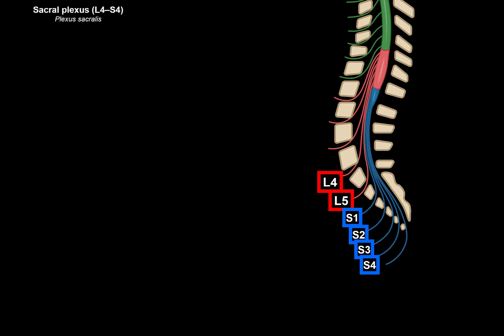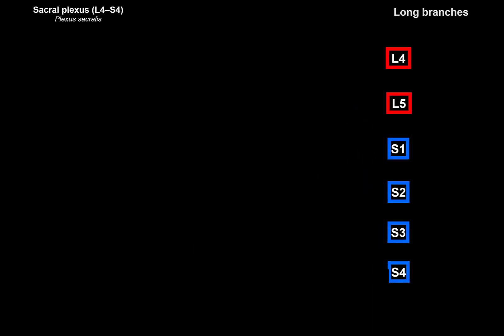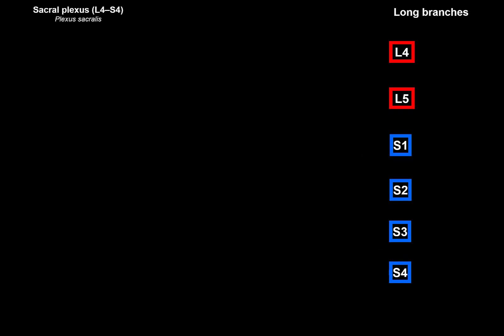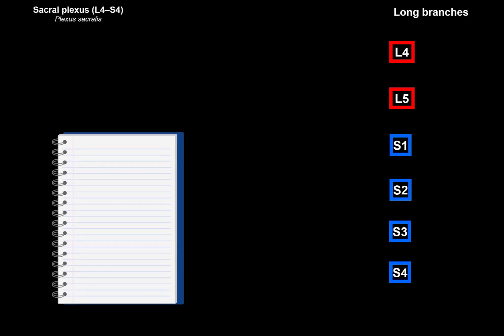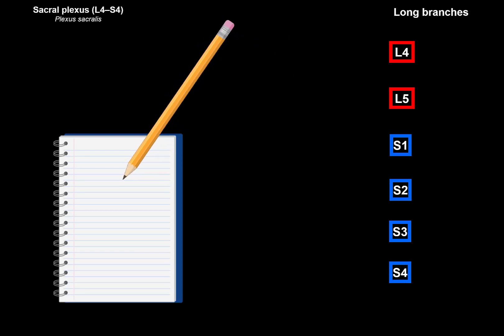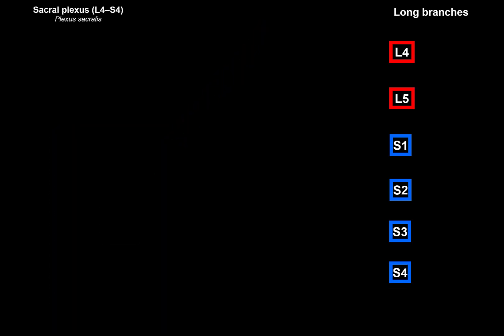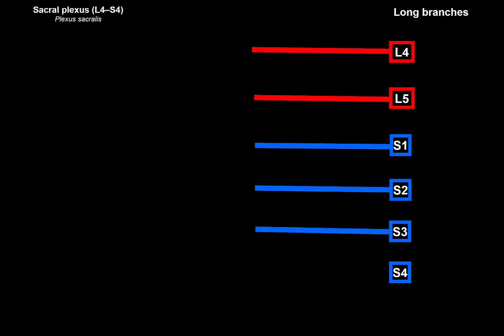This is a pretty big plexus. One of the main nerves coming from the sacral plexus is the sciatic nerve, and we'll talk about the clinical correlation with that. To simplify this, grab a piece of paper and a pen and draw the scheme with me — once you do that, you'll remember this much more easily. Start by drawing a line from L4 all the way down to S3.